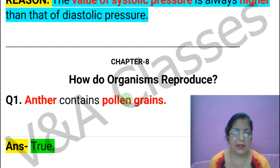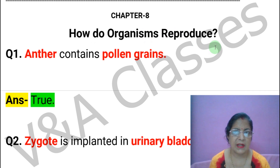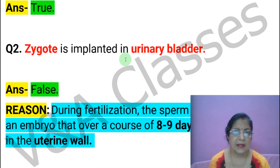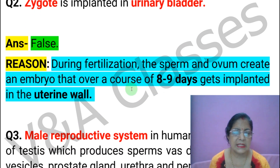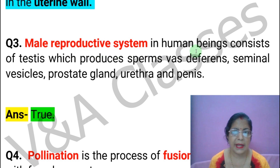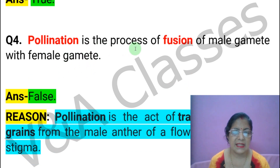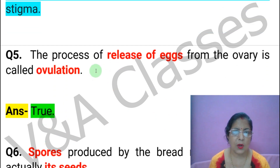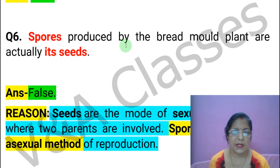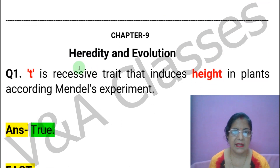Now Chapter 8: How Do Organisms Reproduce? First statement: The anther contains pollen grains. This statement is TRUE. Next statement: The zygote is implanted in the urinary bladder. This statement is FALSE. Next statement: The male reproductive system in human beings consists of testes (which produce sperms), vas deferens, seminal vesicles, prostate gland, urethra, and penis. This statement is TRUE. Next statement: Pollination is the process of fusion of a male gamete with a female gamete. This statement is FALSE. Next statement: The process of release of eggs from the ovary is called ovulation. This statement is TRUE. Next statement: Spores produced by the bread mold plant are actually its seeds. This statement is FALSE.